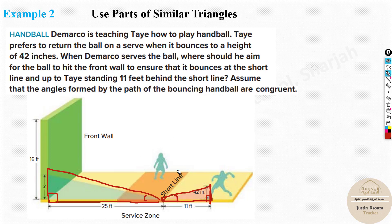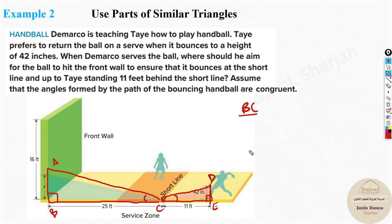Since the triangles are similar, corresponding sides are proportional. Let me label the triangles with points A, B, C and D, E. The ratio of the bases equals the ratio of the heights: BC divided by CE equals AB divided by DE. Before substituting, notice that the height is given as 42 inches while the other measurements are in feet, so we need to convert.